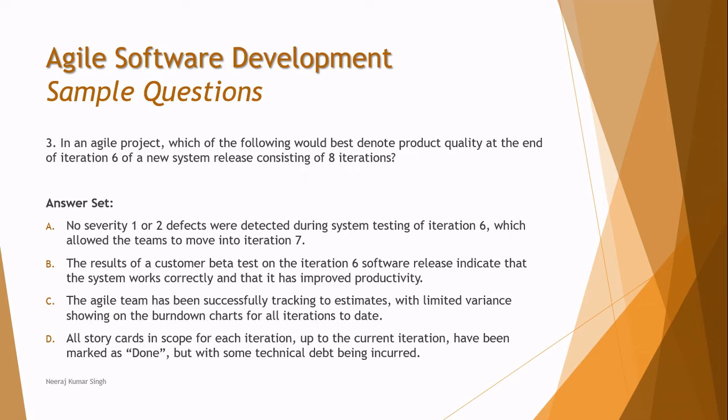Option B: results of the consumer beta test on the iteration 6 software release indicate that the system works correctly and has improved productivity. That could be something more important — you can relate it back to the previous question, where beta testing at this point would be really helpful to determine if we are still on the right track.